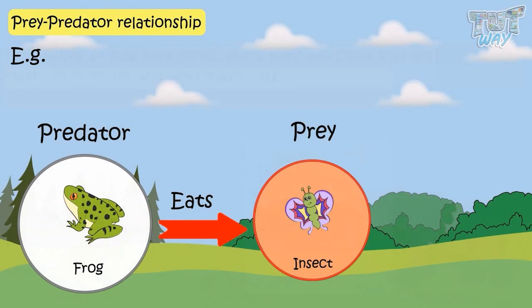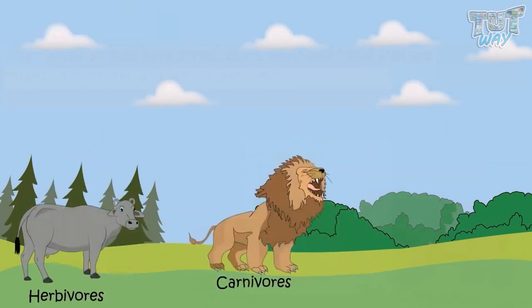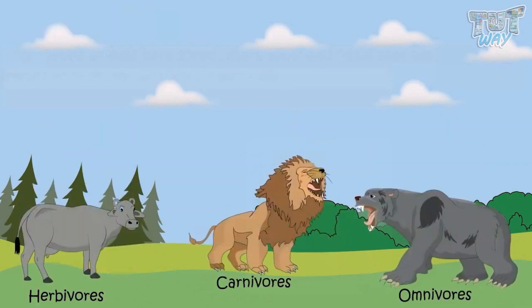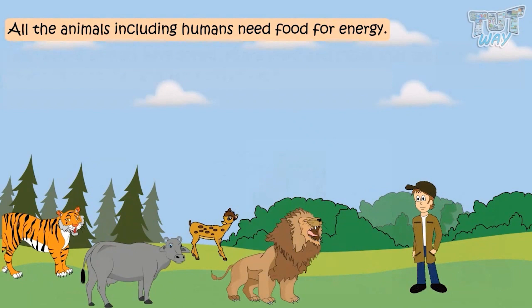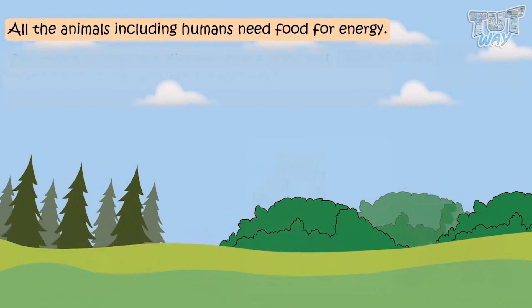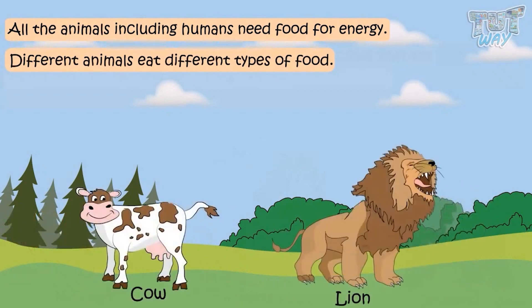Now let's learn some other terms: herbivores, carnivores, and omnivores. All animals, including humans, need food for energy. Different animals eat different food — like cows and lions do not eat the same food. We classify animals on the basis of what they eat.